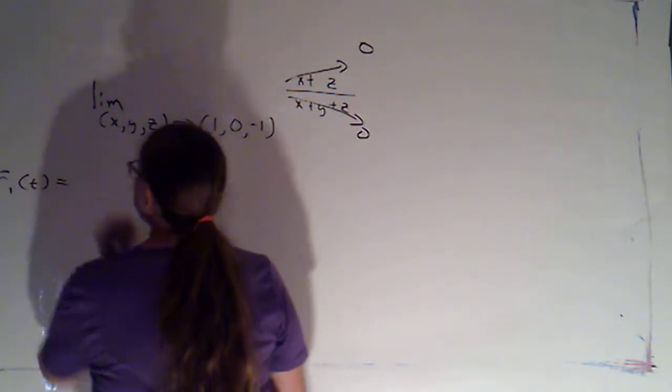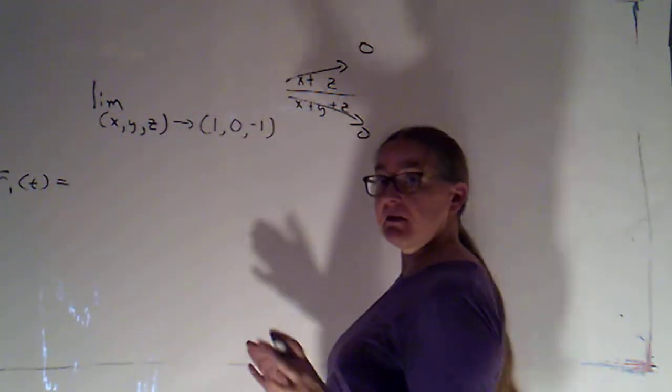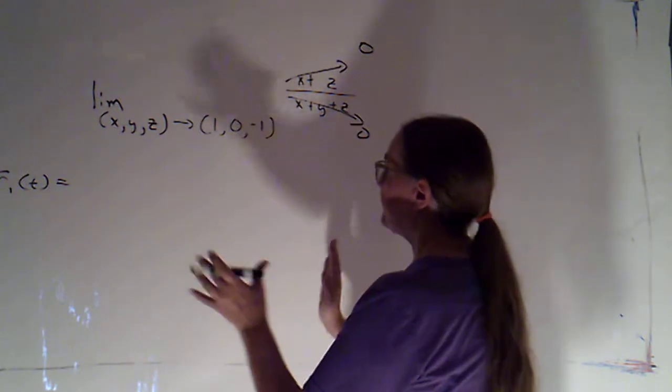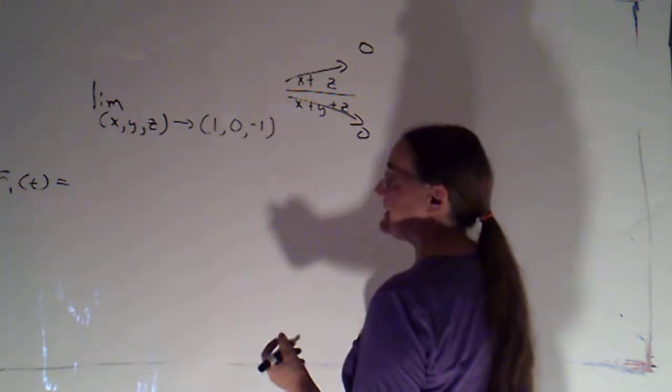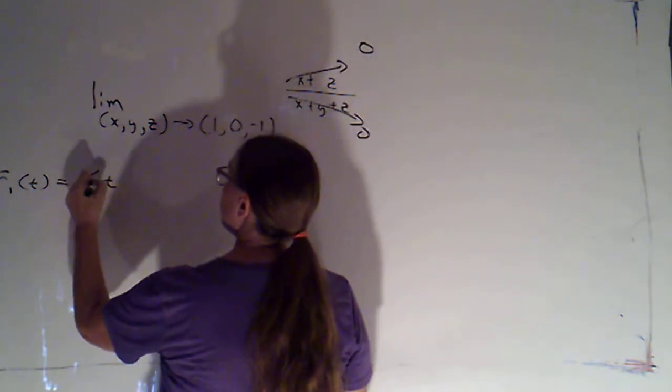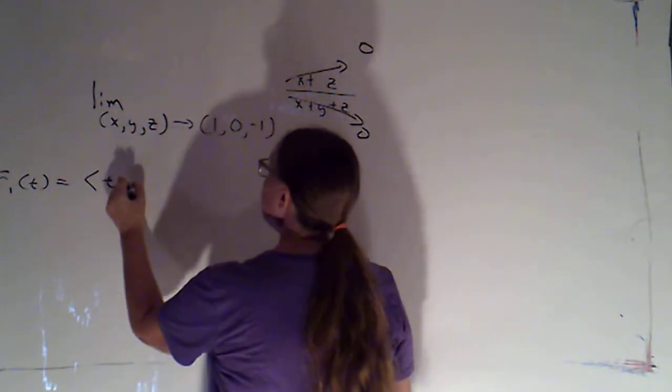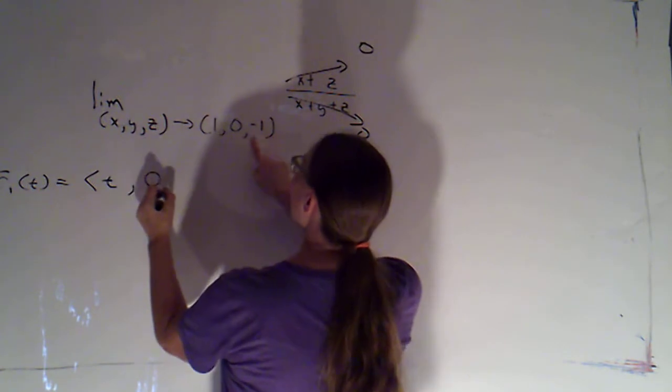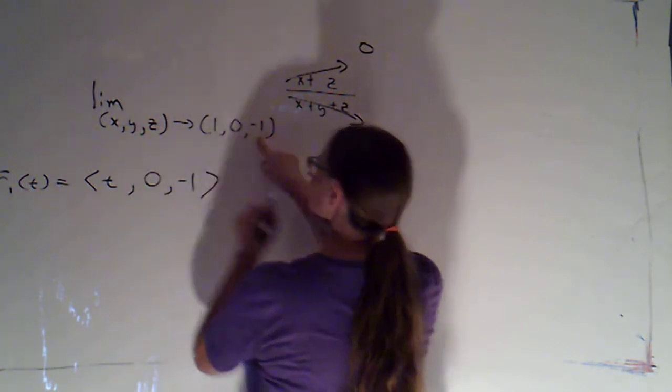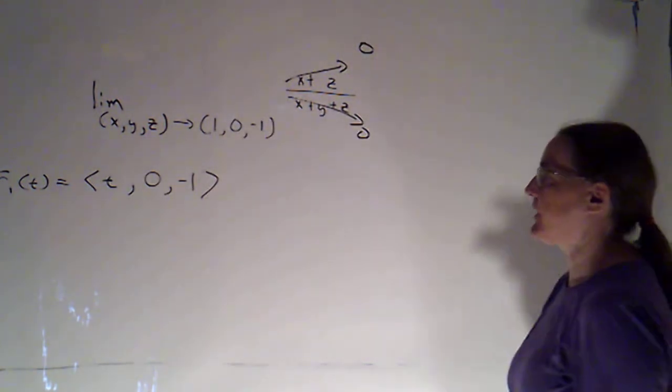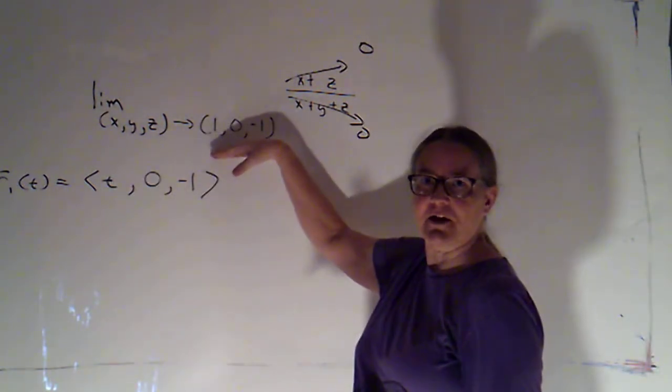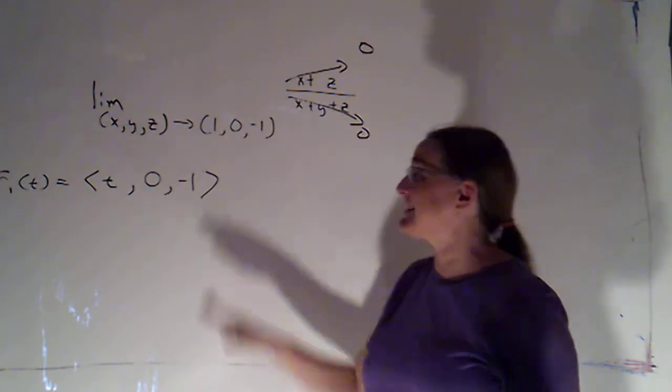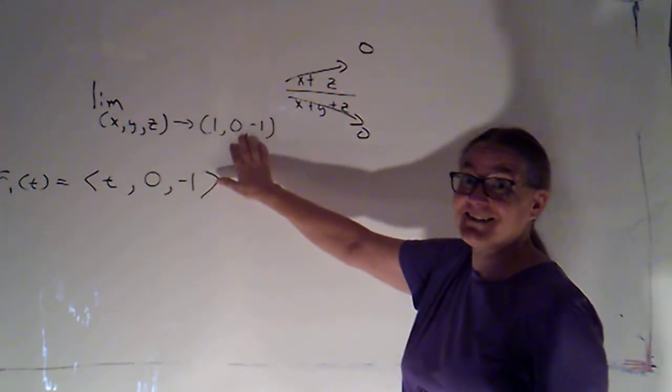So let's try that. R1(t), I'm going to go parallel to the x-axis, so I'm going to have y and z fixed. So x is t, y is going to be 0, and z is going to be negative 1. Very important that the paths actually go through the point. So I can't use, for example, the x-axis, because this isn't on the x-axis.